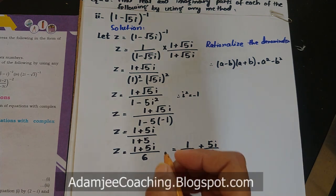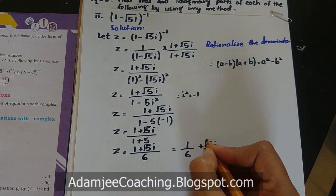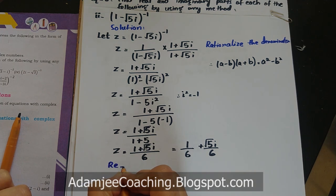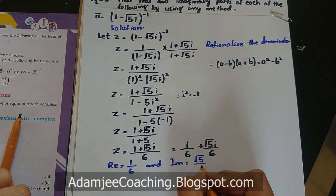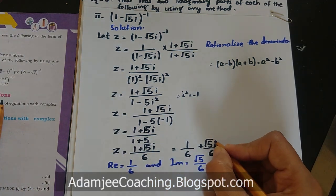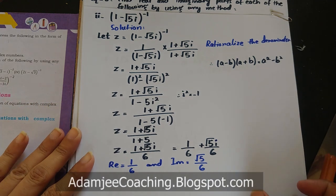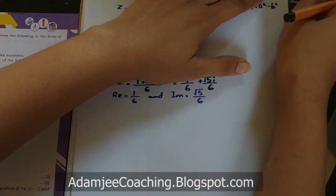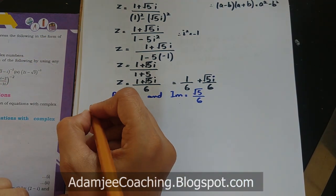تو z = 1/6 + (√5/6)·iota۔ Real part Re = 1/6 اور Imaginary part Im = √5/6۔ یاد رہے imaginary part میں iota نہیں لکھتے۔ یہ تھا part two کا answer۔